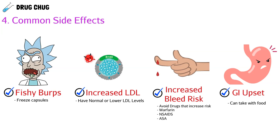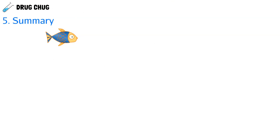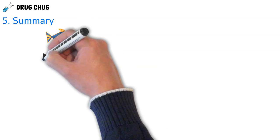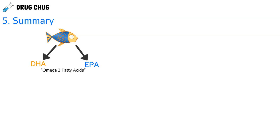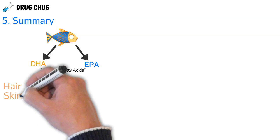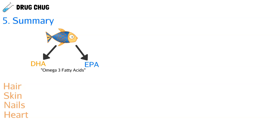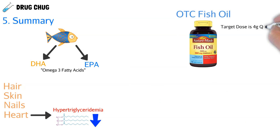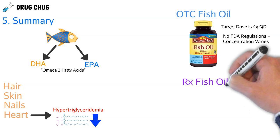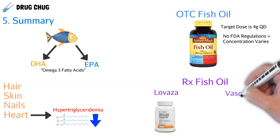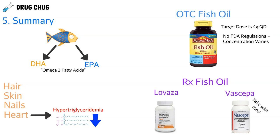Quick summary: fish oils come from fish — we extract DHA and EPA, which are our omega-3 fatty acids. Fish oil is good for hair, skin, nails, and primarily the heart by lowering triglyceride levels. Over-the-counter fish oils exist but lack FDA regulation, so concentration can vary capsule to capsule. The target dose for all fish oils is four grams daily. The two prescription options are Lovaza and Vascepa — Vascepa must be taken with food. Common side effects include fishy burps, which can be reduced by freezing the capsules.